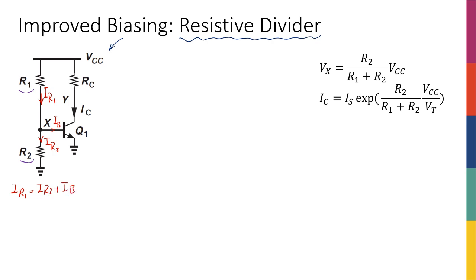But if I assume that the base current is actually quite small, assuming a very small or, in other words, negligible IB, I can say that IR1 is almost equal to IR2.